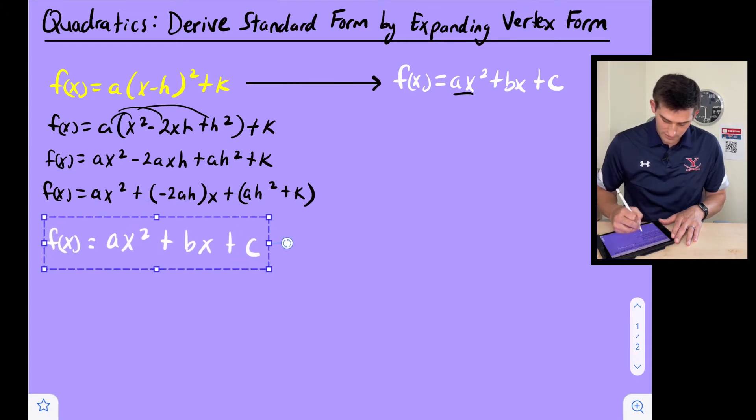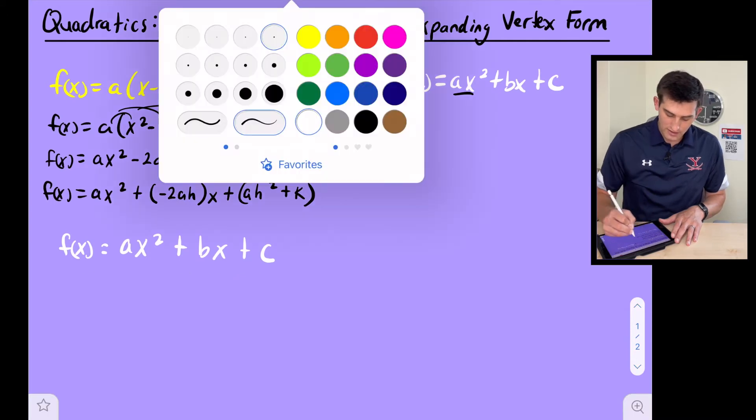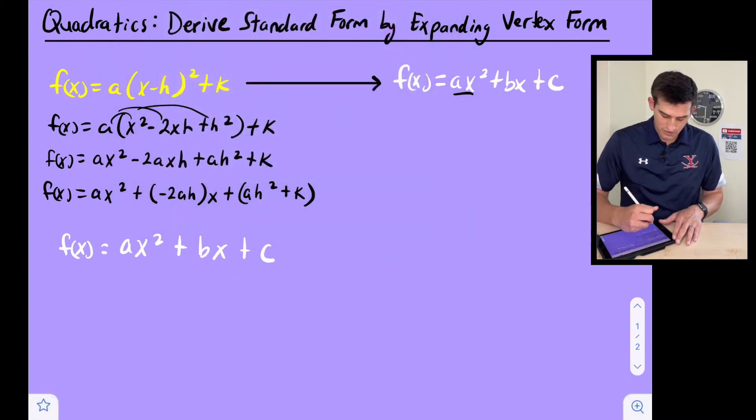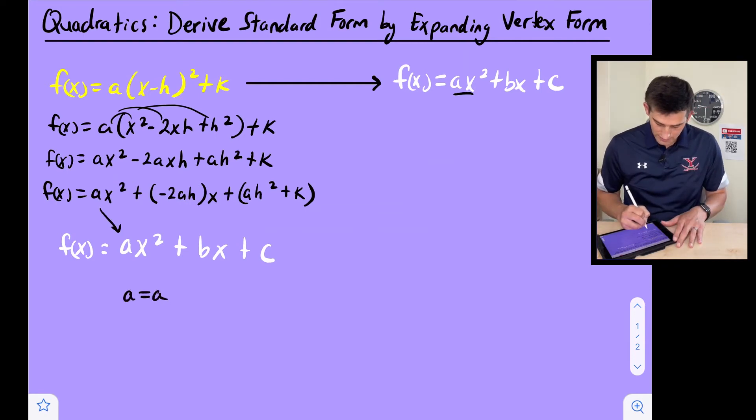Let's write our standard form right below this and we'll do it in white here. Let's write it as f(x) = ax² + bx + c. Now let's make some connections here. So look at what we have: a is just the same as a, so we can write a = a, and what does this mean? a is the same thing or it has the same meaning in vertex form as it does in standard form.